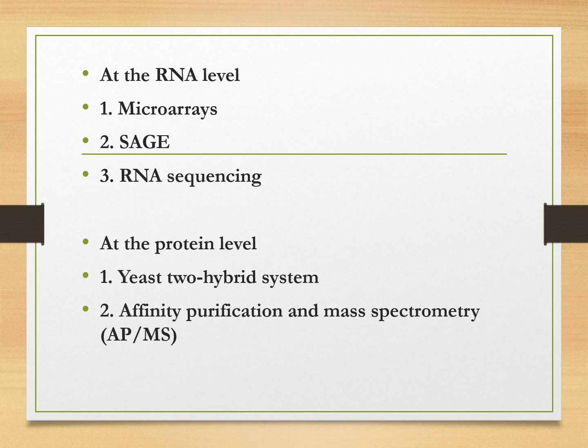Apart from other methods like northern blotting, which can only target a single RNA molecule, functional genomics requires analyzing the function of many genes simultaneously. That is why traditional methods of blotting or hybridization are not as useful here, and we rely on high-throughput methods like microarray, SAGE, and RNA sequencing.